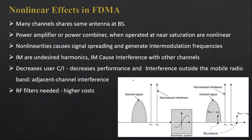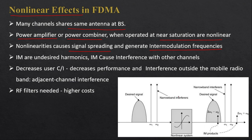Because filtering of channels is important in FDMA, non-linear effects are also generated. Many channels share the same antenna at the base station, and components in the transmitter and receiver circuits — such as power amplifiers, power combiners, and mixers — become non-linear when operated near saturation. This non-linearity causes signal spreading and generates intermodulation frequencies.